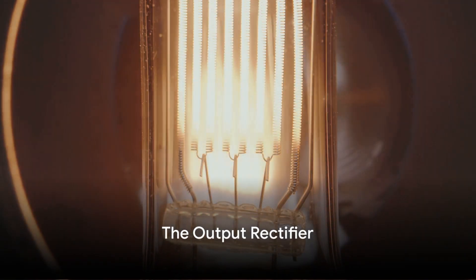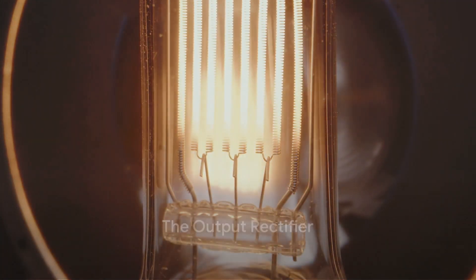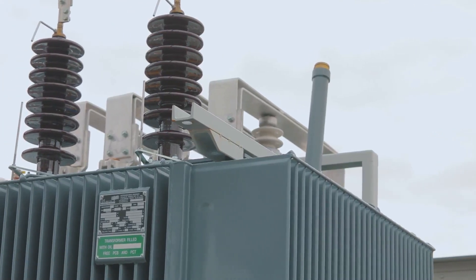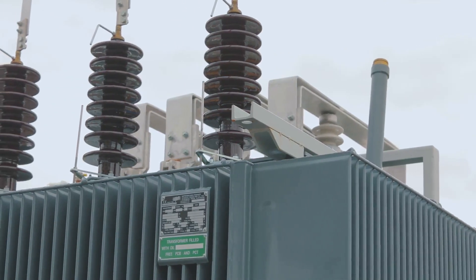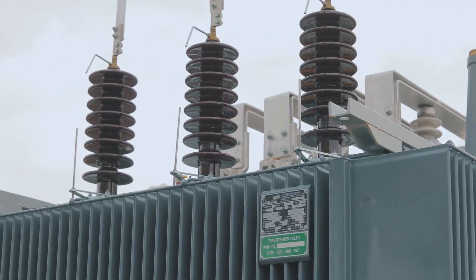The transformed DC power then moves onto the output rectifier. The output rectifier acts like a converter, changing the DC power back into AC power, now at the required voltage.